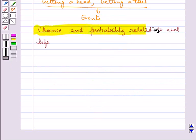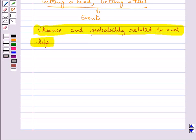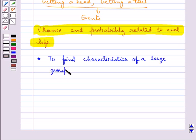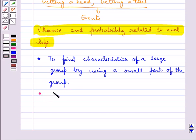Now we discuss chance and probability related to real life. The use of probability is made in various cases in real life. It can be used to find characteristics of a large group by using a small part of the group.